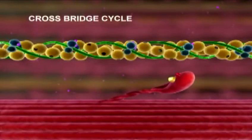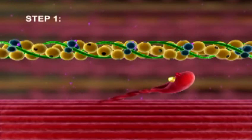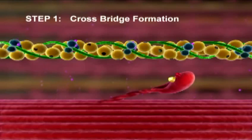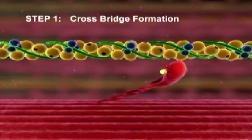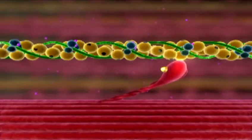A crossbridge cycle may be divided into four steps. Step 1: Crossbridge Formation. The activated myosin head binds to actin, forming a crossbridge. Inorganic phosphate is released, and the bond between myosin and actin becomes stronger.